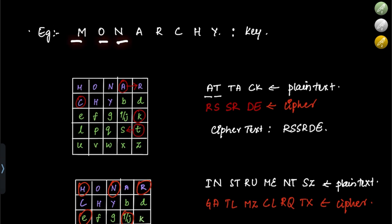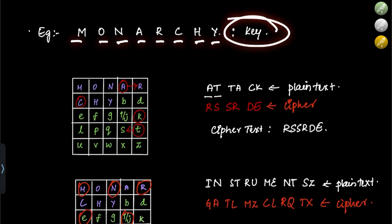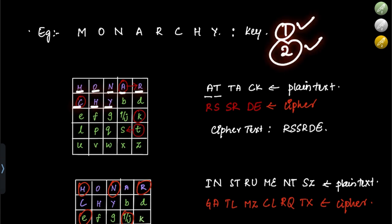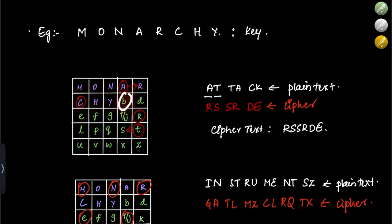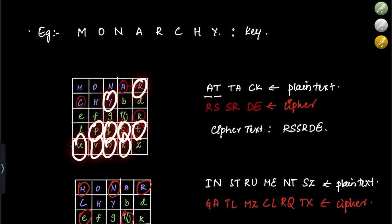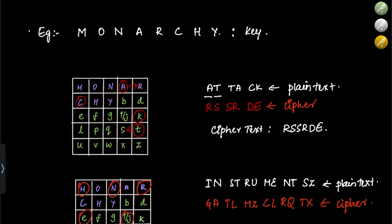The keyword given is MONARCHY. So we fill M, O, N, A, R, C, H, Y into the matrix first. Then we fill remaining alphabets: B, D, E, F, G, I/J, K, L — skipping M which is already there — then P, Q — skipping R — S, T, U, V, W, X — skipping Y — and Z. This fills all 25 boxes correctly.